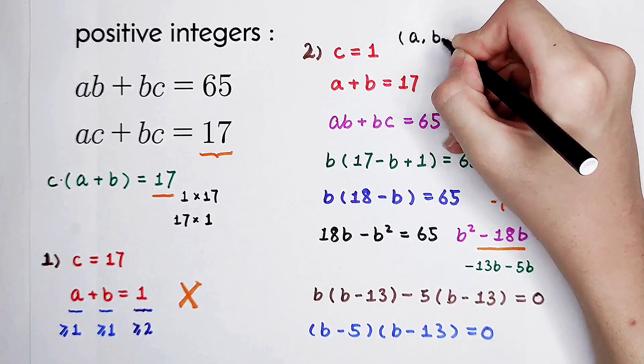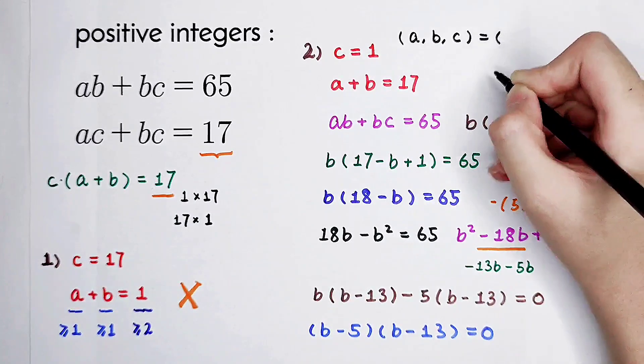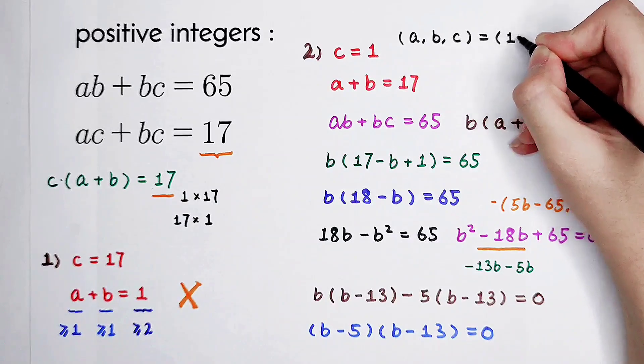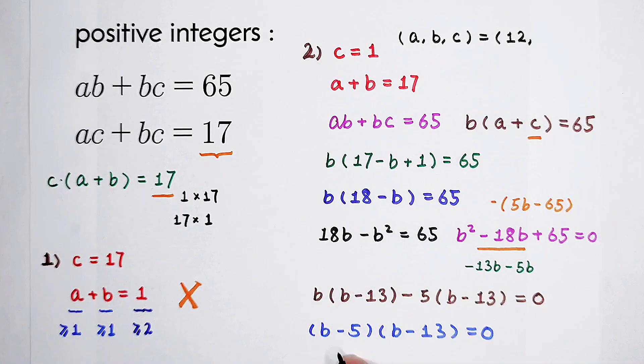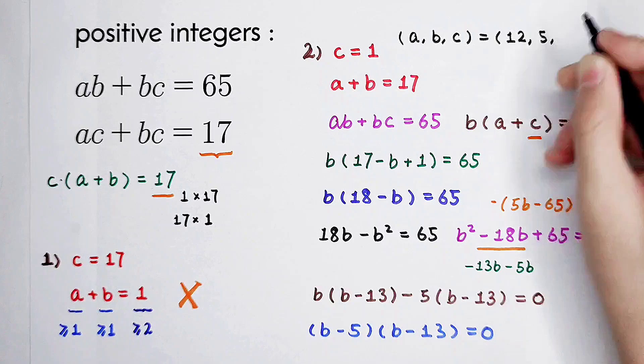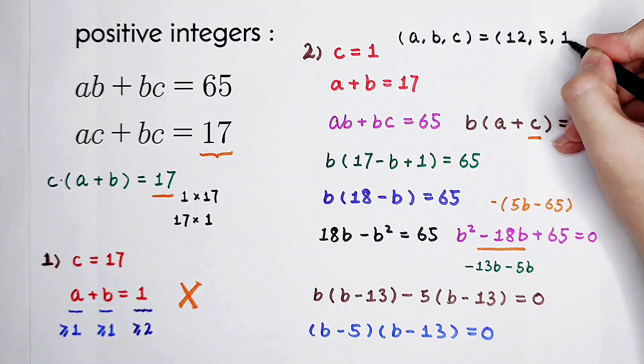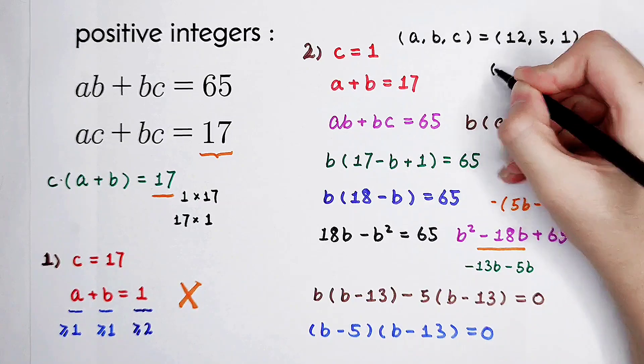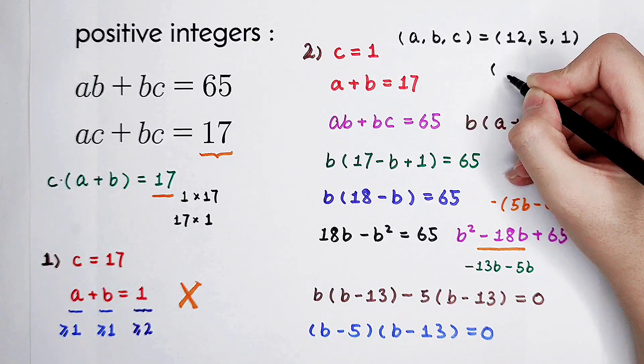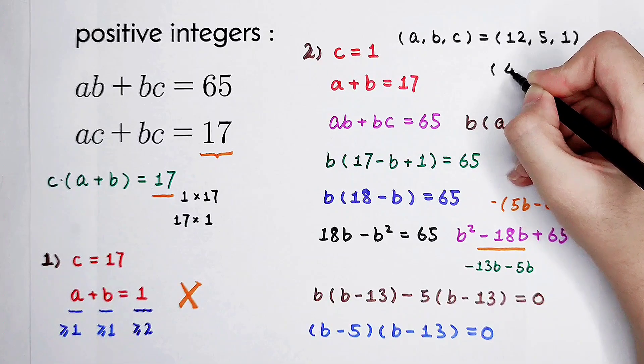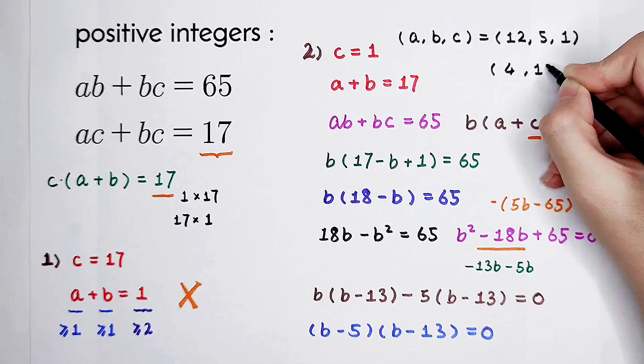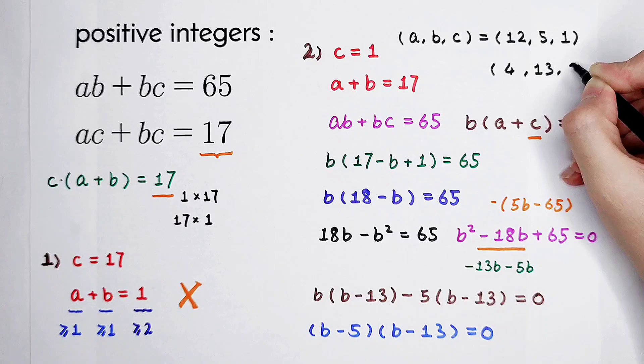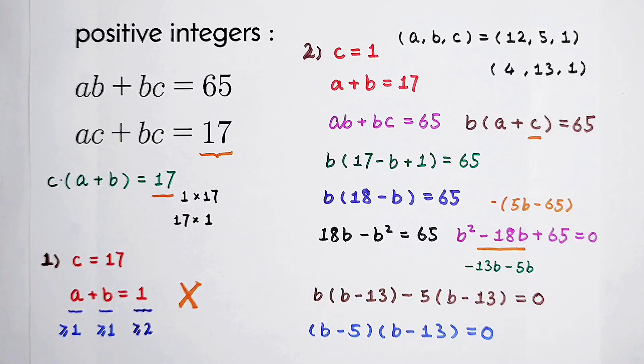a, b, c is: a1 is 12, b1 is 5, c1 is 1. And a2 is 4, b2 is 13, c is just 1. Do you get them?